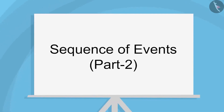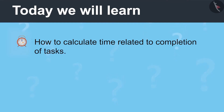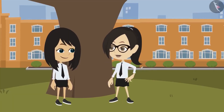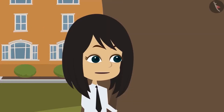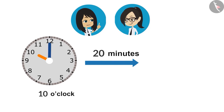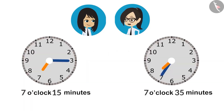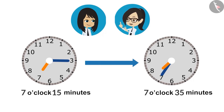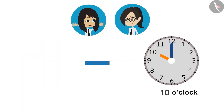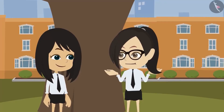Sequence of Events Part 2. Today we will learn how to calculate the time related to completion of tasks. Let us ask each other some questions related to what was learned last time. Last time we learned three things: first, if the start time of a task is known and how much time it will take, we can tell the end time. Second, if the start time and end time are known, we can tell how much time it will take. And third, if the end time and duration are known, we can tell the start time.